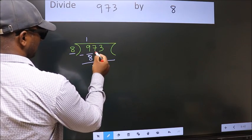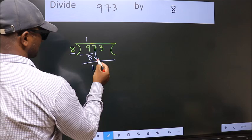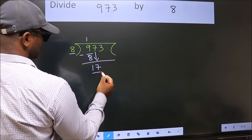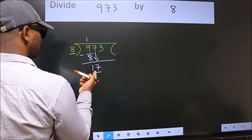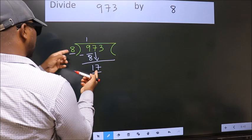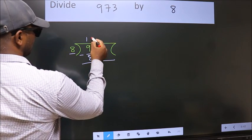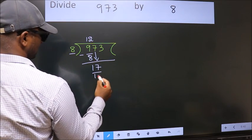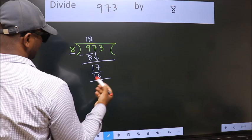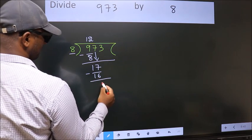After this, bring down the beside number. So, 7 down. So, 17. A number close to 17 in the 8 table is 8 times 2 is 16. Now we subtract. We get 1.